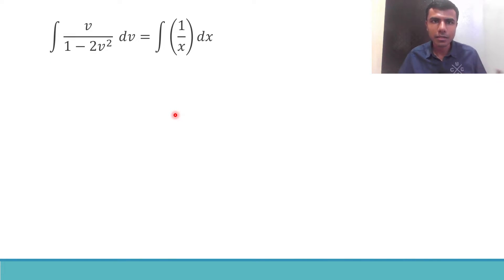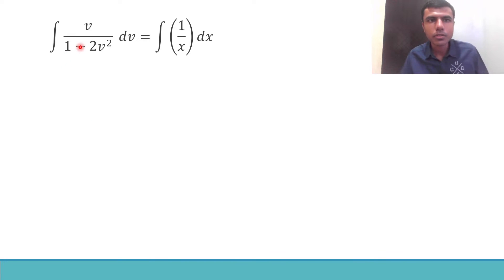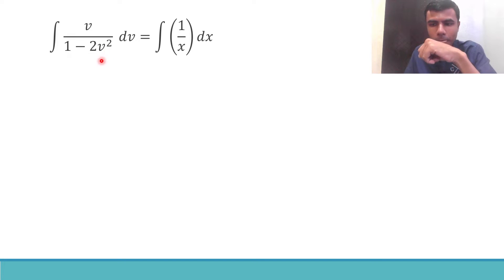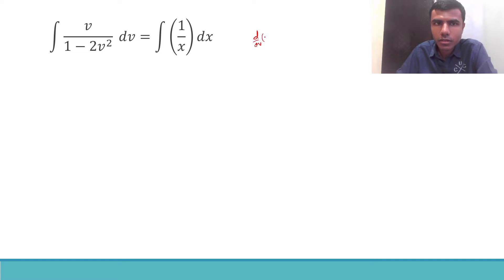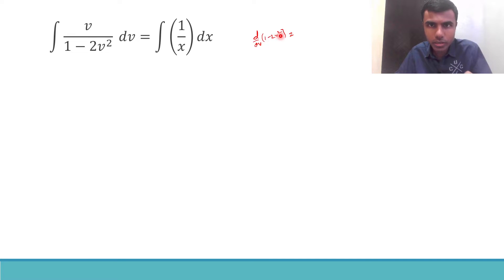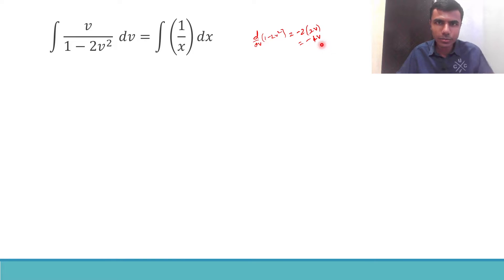The integral of dx/x is nothing but the integral of 1/x dx. Now if you observe carefully, here in the denominator I have (1 minus 2v²). What is the derivative of (1 minus 2v²)? d/dv of (1 minus 2v²) — derivative of 1 is zero, and derivative of 2v² is 2v, so minus 2 times 2v gives minus 4v. So the derivative of the denominator is minus 4v.